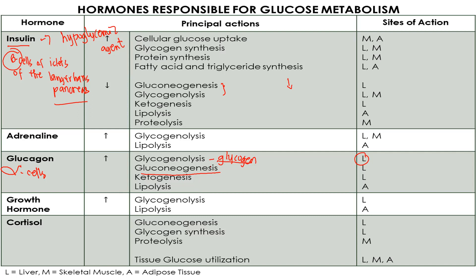Glucagon promotes ketogenesis and lipolysis. In gluconeogenesis, non-carbohydrate compounds such as fats or proteins are metabolized with the help of glucagon, resulting in the formation of ketones — hence ketogenesis. Glucagon increases lipolysis because stored fats are used as the source of energy when the primary source — glucose — is impaired. Adrenaline is a hormone that promotes glycogenolysis and lipolysis. Growth hormone is also responsible for glycogenolysis and lipolysis.